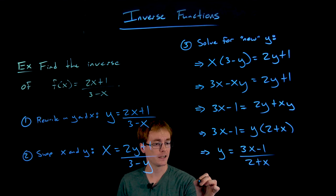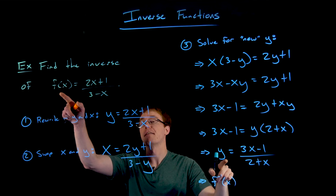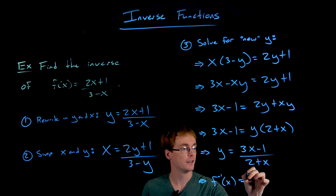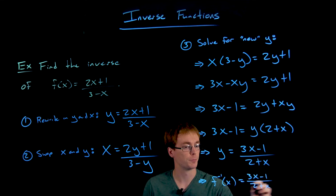And our final step is just to remember that this new y is not representing f of x anymore. It's representing f inverse of x. And that switch happened when we swapped the roles of x and y early on. So our inverse function has the equation f inverse of x is equal to 3x minus 1 over 2 plus x.